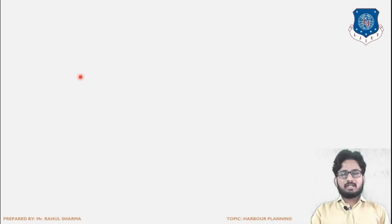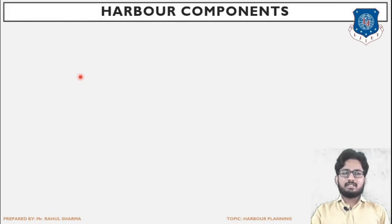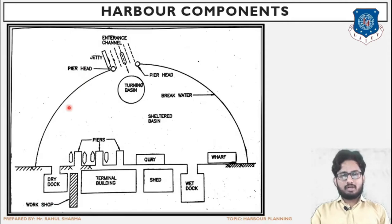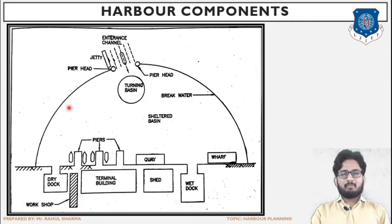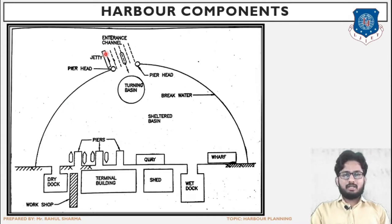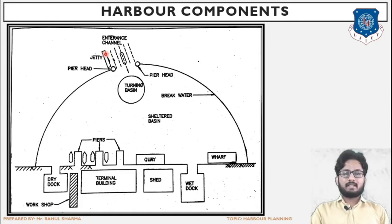Now we shall study how the functions and uses of these components are set in such a manner that they work in cohesion and coordination with each other. This is a very important figure from an exam point of view, from the subject point of view, and more importantly from an understanding point of view, in which all the components have been shown. Let's discuss the function of each component and their specific location — that is, why they have been placed at the location specified in the drawing.